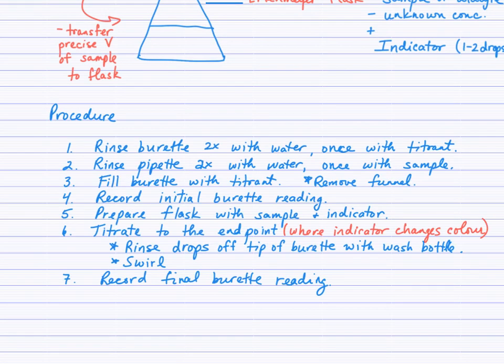The general procedure for a titration is as follows. You'll be working in a group — put one person rinsing the burette, which needs to be rinsed twice with water and once with the titrant. Someone else works on rinsing the pipette, again twice with water and once with the sample. Be careful not to draw any liquid up into the pipette pump. Fill the burette with titrant after rinsing, making sure to remove the funnel off the top. Record the initial burette reading. Prepare the Erlenmeyer flask with the sample using the pipette and add a couple drops of indicator.